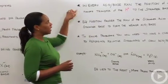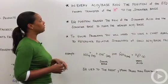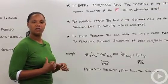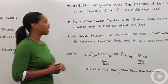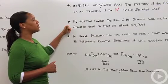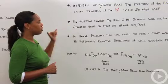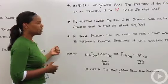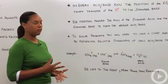In every acid-base reaction, the position of the equilibrium favors the transfer of the proton to the stronger base, as I just indicated in the last example. So the equilibrium position favors the reaction of the stronger acid and the stronger base to form the weaker acid-base pair.